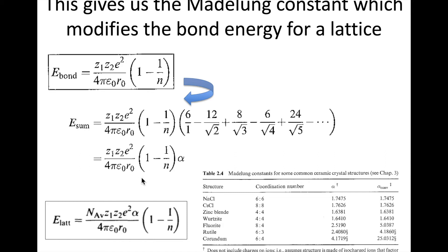One quick modification: I want to mention the lattice energy equation because there's a significant difference from the pairwise summation form. Looking through all the terms — alpha, charges, electron charge, permittivity constants — they're all the same, but there is one important difference: an N_Av term, which is Avogadro's number. This converts the lattice energy into per-mole terms, making it more usable. So the lattice energy equation is essentially the same but multiplied by Avogadro's number.